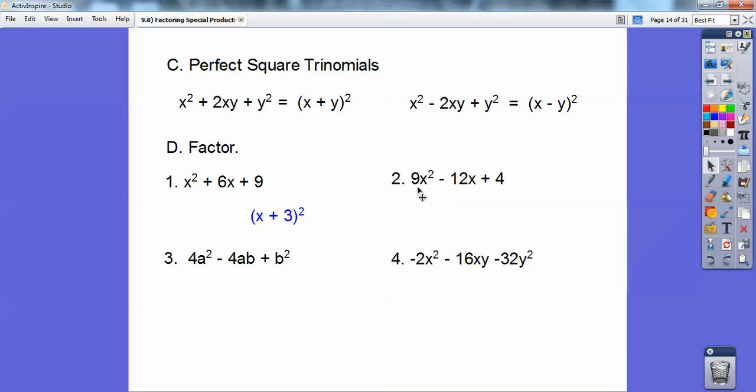Over here, square root of that is 3x. The square root of that is 2. So I'm thinking 3x minus 2 inside the parentheses right there. And it's minus because of that minus right there. Put them together and double it. So that's 6x and, yes, 12x. So that one factors right there. You have to check. Otherwise, it doesn't work.